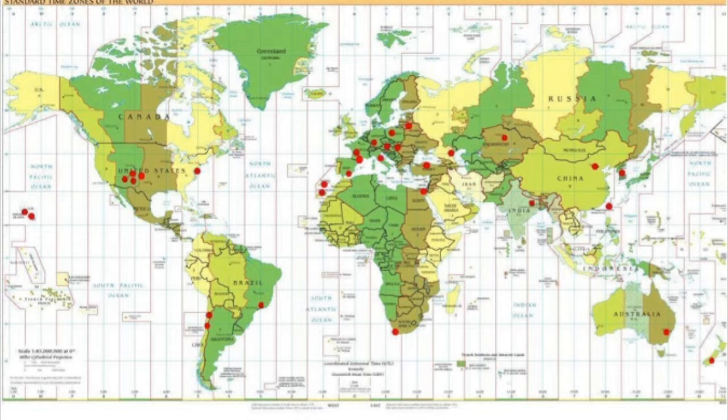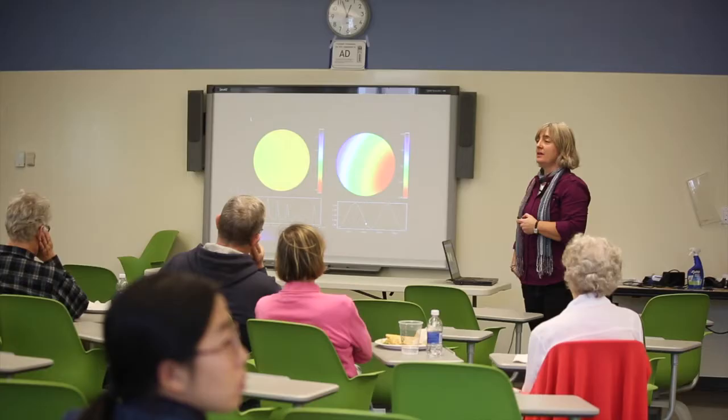The Whole Earth Telescope is something that I got involved in when I was in graduate school. We started with Texas, and then you pass the star over to a telescope in Hawaii — they keep observing it — and you pass it all around the world. So you try to continuously observe the star 24 hours a day, as long as you can.